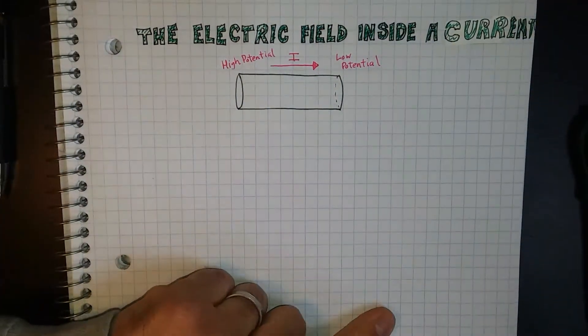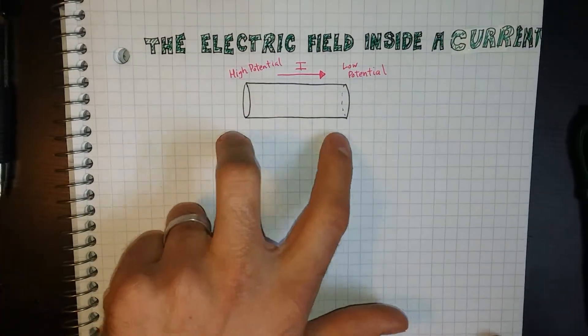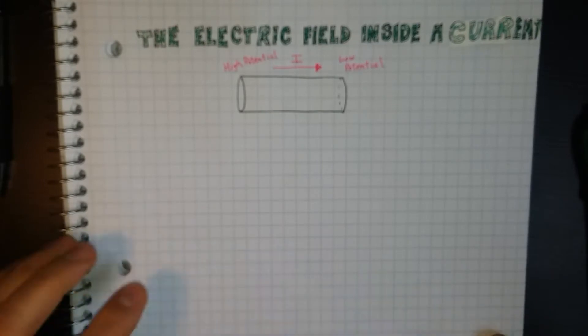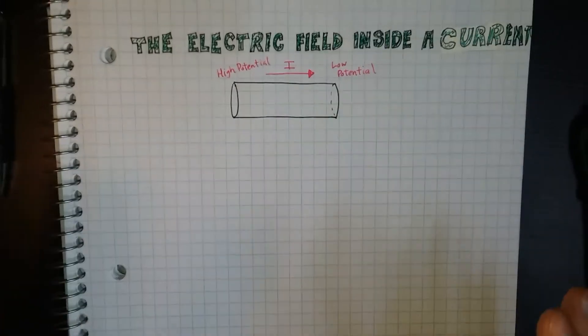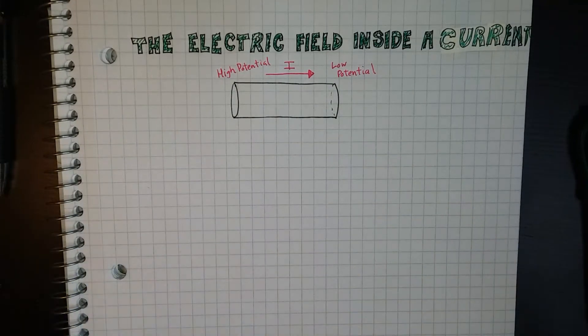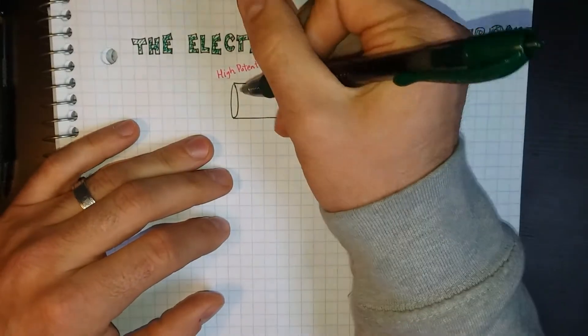A real wire does have some resistance, so there's definitely some potential difference. We're not talking about an ideal case where a wire has no resistance. We're talking about an actual real-life wire where all these charge carriers...